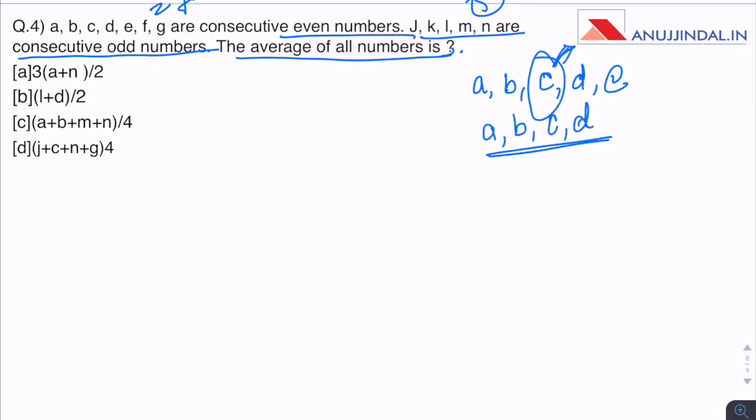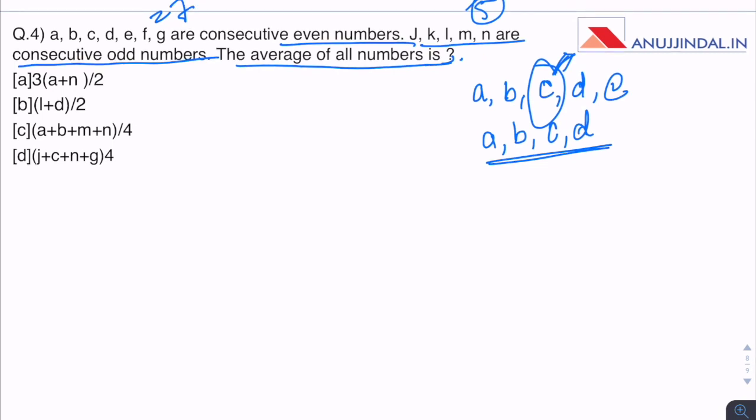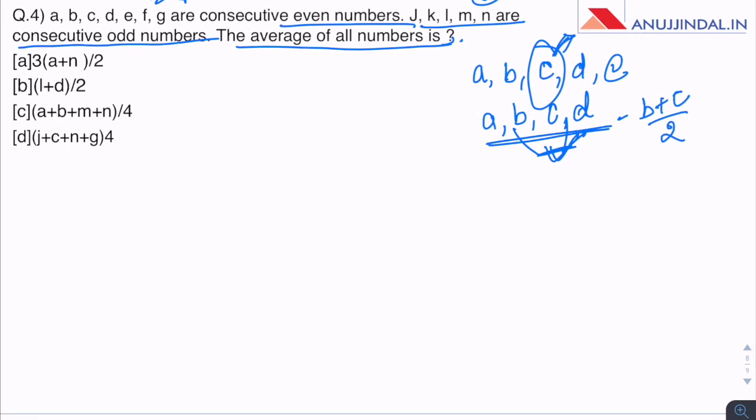If there are 4 numbers A, B, C, D which are consecutive, then their average would be B plus C by 2. Take the 2 middle terms and divide by 2, you will get the average. The same thing follows for consecutive odd numbers and even numbers. If A, B, C, D and E are 5 consecutive even numbers, then their average would be the central number. You can solve it just to be sure.